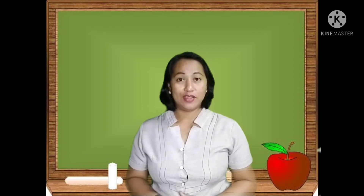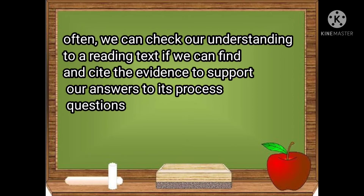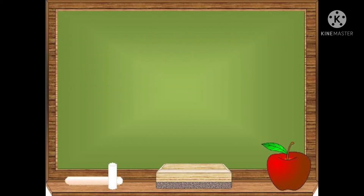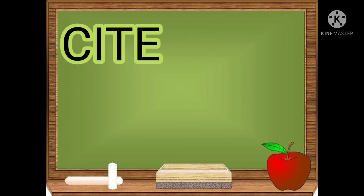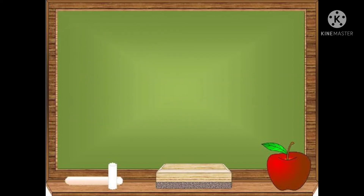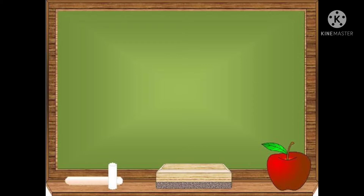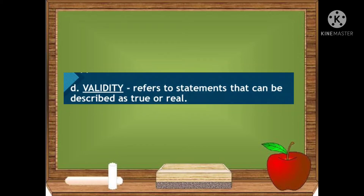To judge the validity of evidence, we need first to identify and understand the claim. We can check our understanding of a reading text if we can find and cite the evidence that supports our answers to its process questions. 'Cite' is a verb which means to state a source or provide an example to support a response. 'Evidence' refers to information that supports a claim. 'Validity' refers to statements that can be described as true or real.